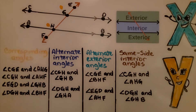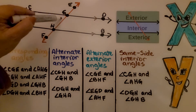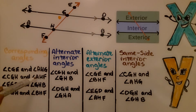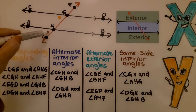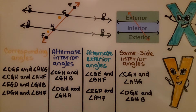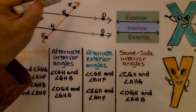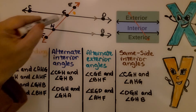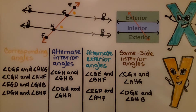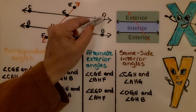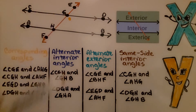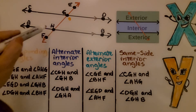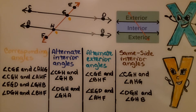For corresponding angles: angle CGE and angle AHG are corresponding angles. Angle CGH and angle AHF are corresponding angles. Angle EGD and angle GHB are corresponding angles. And angle DGH and angle BHF are also corresponding angles.